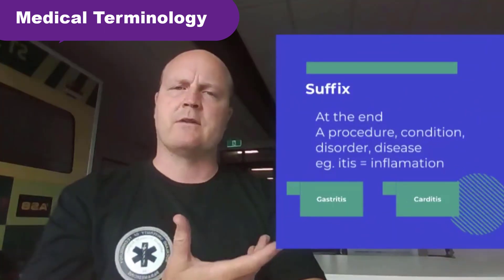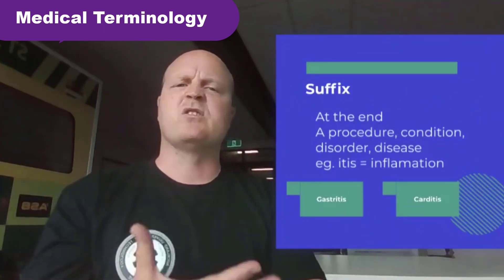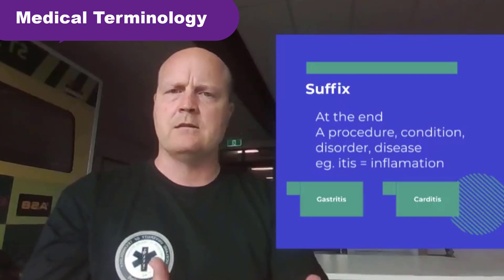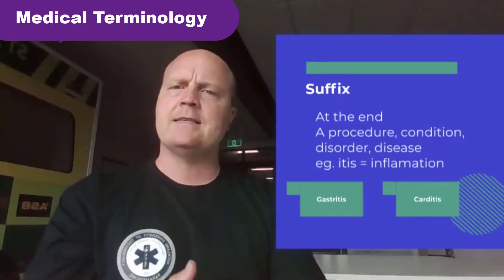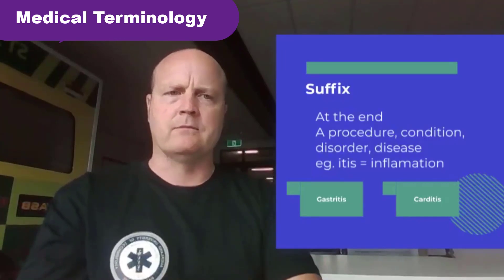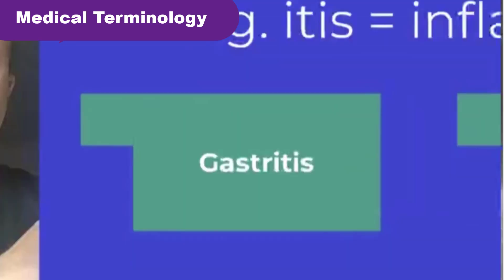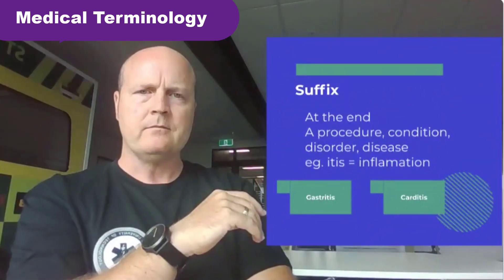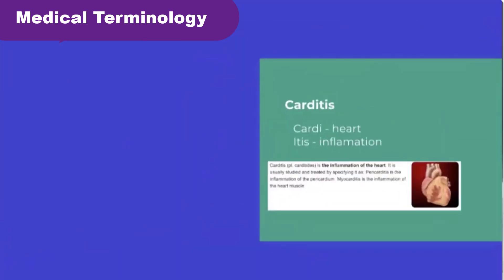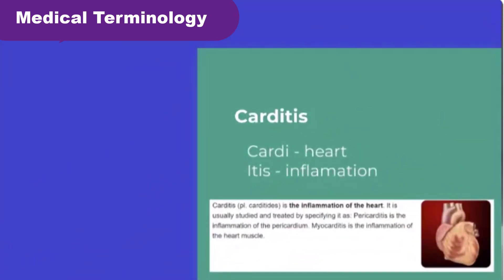The suffix is the end of a word. When you look at the suffix, it could be a procedure, a condition, a disorder, or a disease. For example, every time we see '-itis' at the end of a word, it means inflammation. So gastritis: gastric means stomach, itis means inflammation — gastritis is an inflammation in the stomach. Then carditis: cardi means heart, itis means inflammation — so inflammation of the heart.